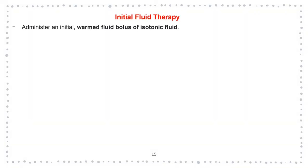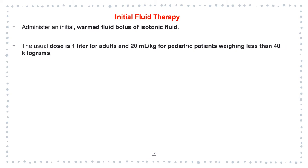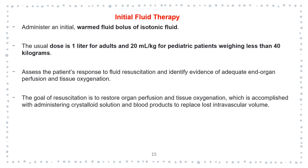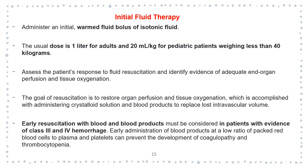Initial fluid therapy. Administer an initial fluid bolus of isotonic fluid. The usual dose is 1 liter for adults and 20 mL per kg for pediatric patients weighing less than 40 kg. Assess the patient's response to fluid resuscitation and identify evidence of adequate end-organ perfusion and tissue oxygenation. The goal of resuscitation is to restore organ perfusion and tissue oxygenation, accomplished with crystalloid solutions and blood products to replace lost intravascular volume.